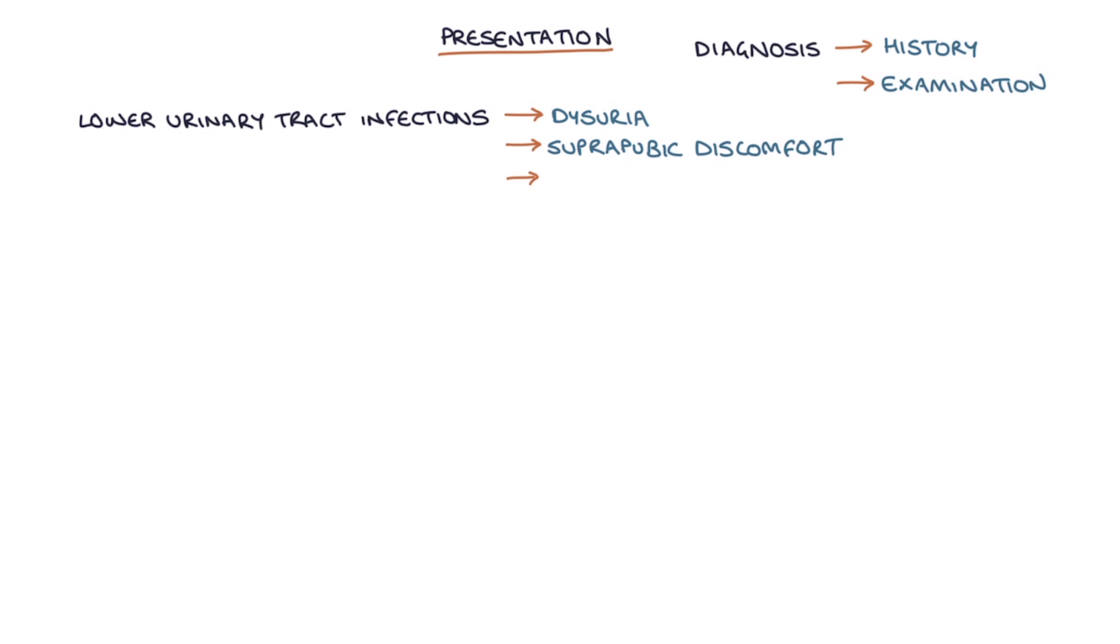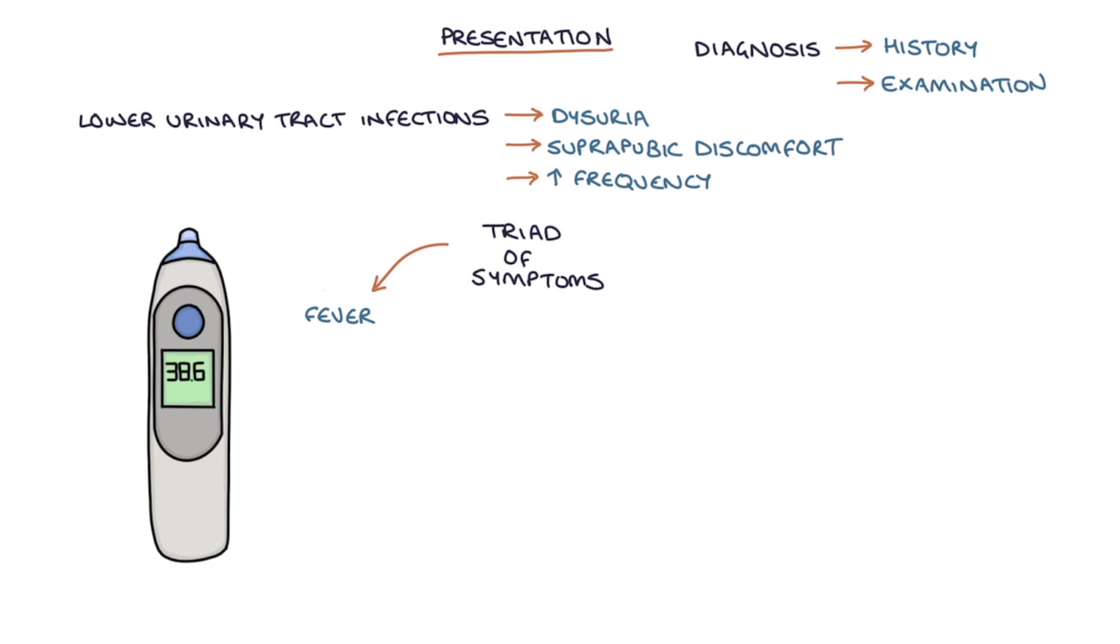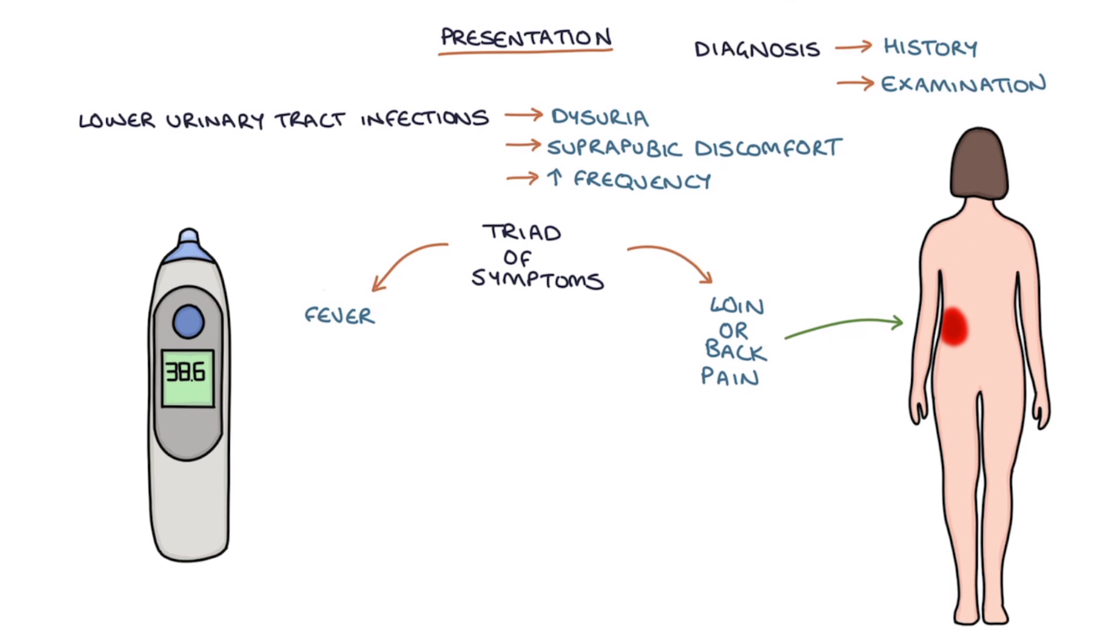Next let's talk about the presentation. The diagnosis of pyelonephritis can be made clinically with a history and examination. Patients have a similar presentation to lower urinary tract infections with dysuria, suprapubic discomfort and increased frequency of urination plus the additional triad of symptoms of pyelonephritis which are fever, loin or back pain which could be bilateral or unilateral and nausea or vomiting.